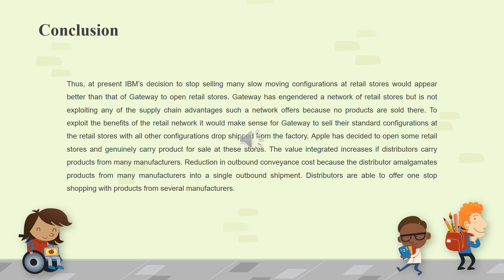At present, IBM's decision to stop selling many slow-moving configurations at retail stores would appear better than Gateway's decision to open retail stores. Gateway has established a network of retail stores but is not exploiting any of the supply chain advantages because no products are sold there. To exploit the benefits of the retail network, it would make sense for Gateway to sell standard configurations at retail stores, with all other configurations drop shipped from the factory. Apple has decided to open some retail stores and genuinely carry product for sale. The value integrated increases if distributors carry products from many manufacturers, with reduction in outbound conveyance cost because the distributor amalgamates products from many manufacturers into a single outbound shipment.